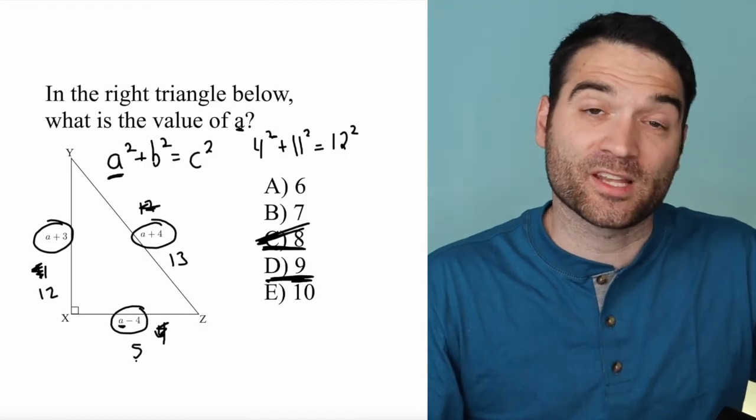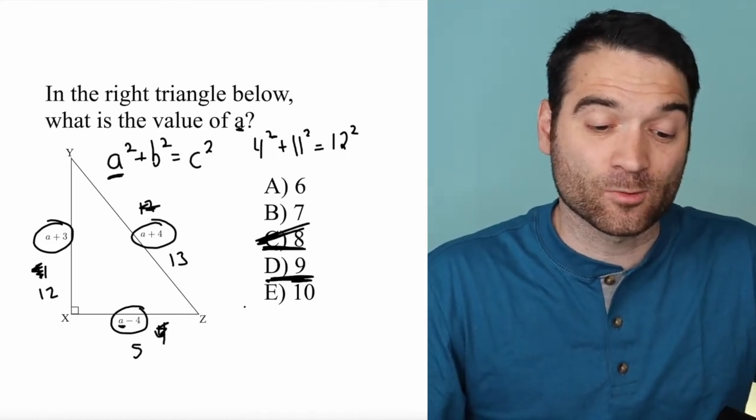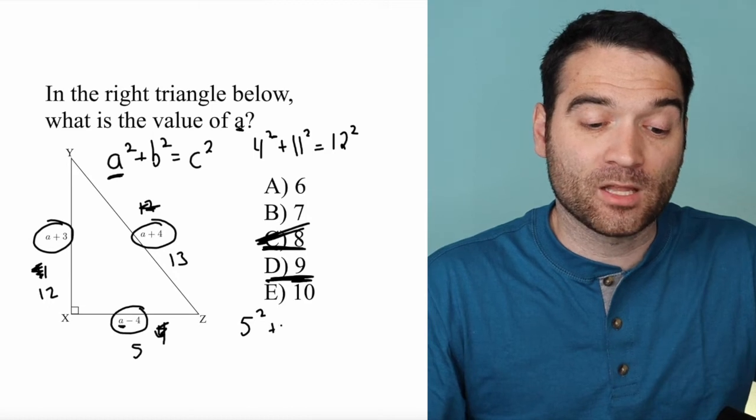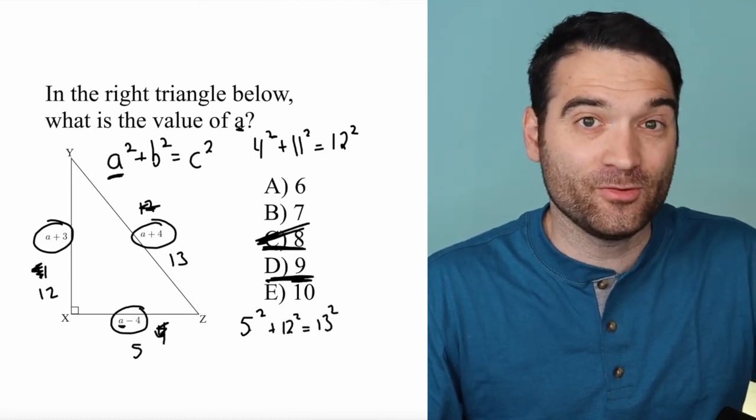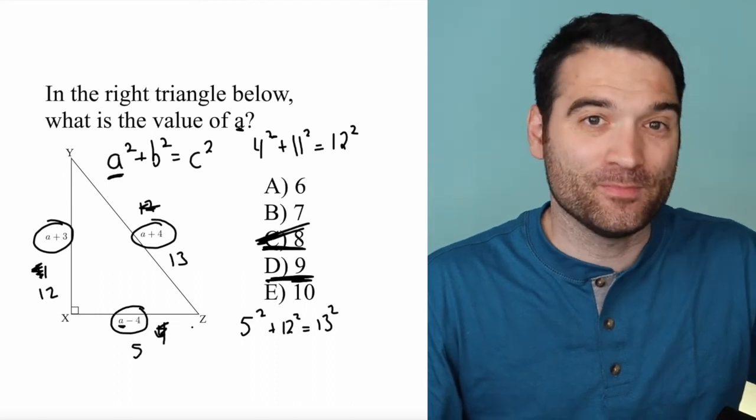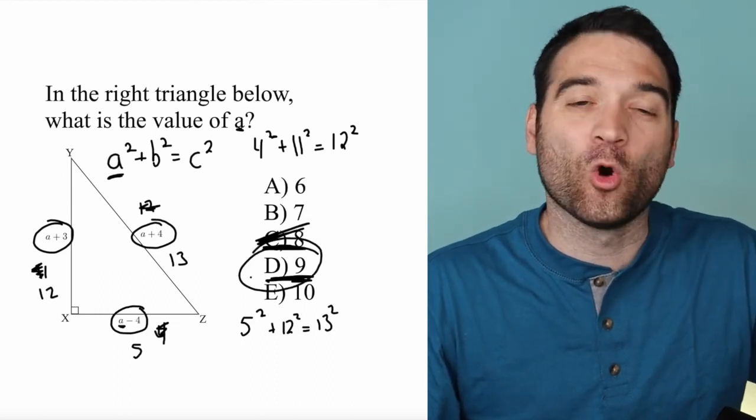The Pythagorean theorem says a squared plus b squared equals c squared. Does it work? Let's find out. 5 squared plus 12 squared equals 13 squared. Is that true? It happens to be true, and this is the only one that works.